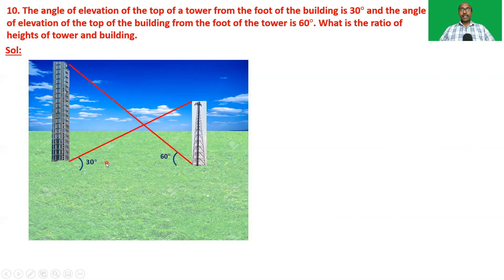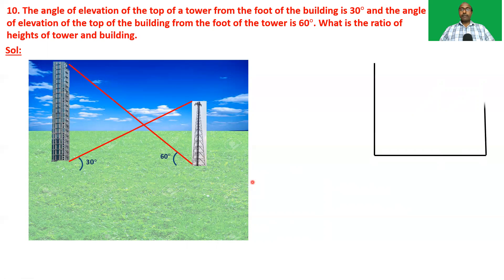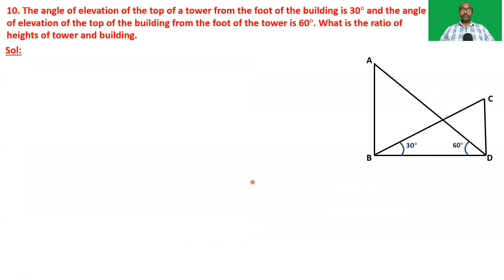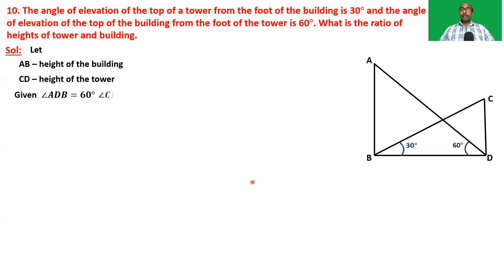From these angles we can say that the building is taller than the tower. The question is: what is the ratio of their heights? We just need to find the ratio of heights. Draw the figure — AB is the height of the building and CD is the height of the tower. Let AB be the height of the building, BCD be the base line, and CD be the height of the tower. Given angle ADB is 60 degrees and angle CBD is 30 degrees.